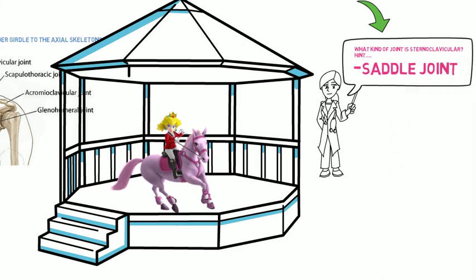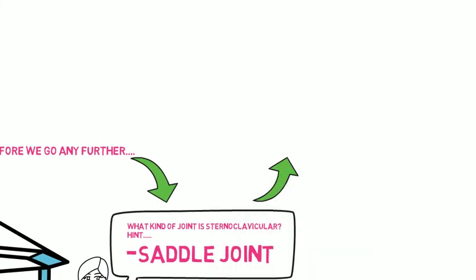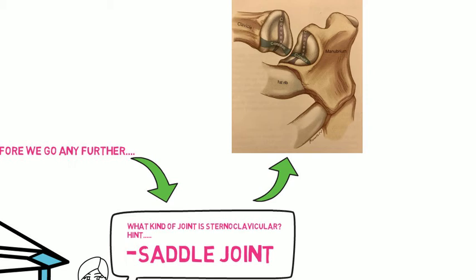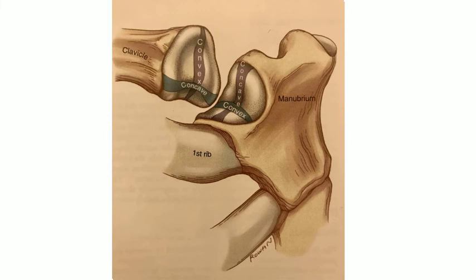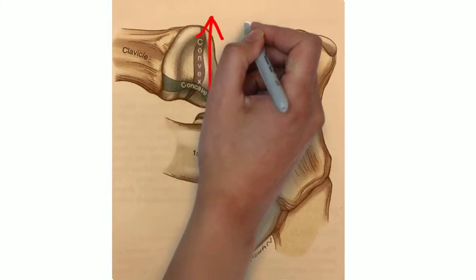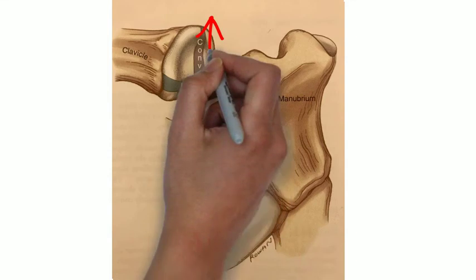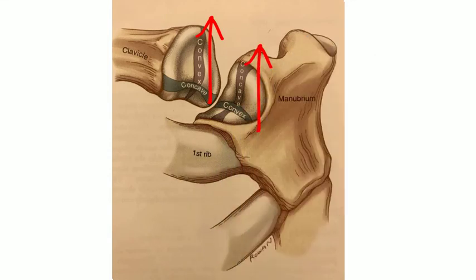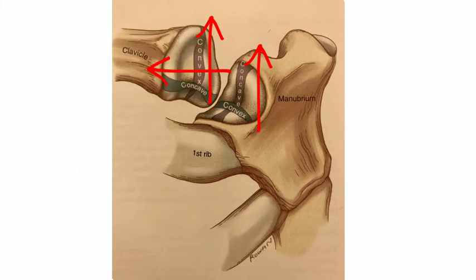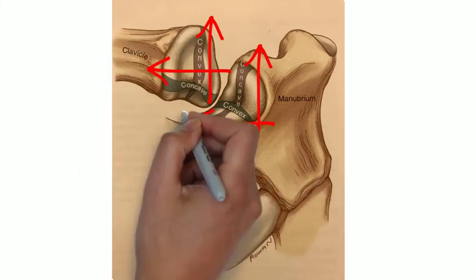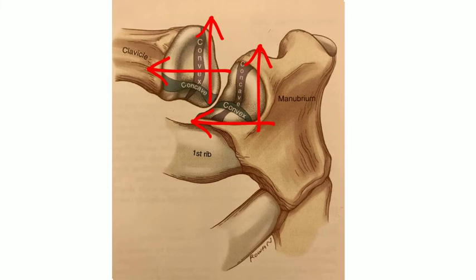Here's an image of an ideal sternoclavicular joint. Take a closer look at the proximal clavicle. It is both concave and convex, and suitably, the manubrium is also both convex and concave. From inferior to superior, the clavicle is convex, and from inferior to superior, the manubrium is concave. From medial to lateral, the clavicle is concave, and from medial to lateral, the manubrium is convex.